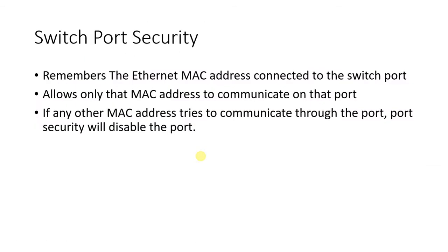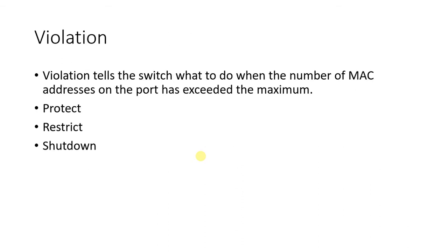For switch port security, the switch remembers the Ethernet MAC address connected to each switch port. Each computer has a unique MAC address, and the port will allow only that MAC address to communicate. If any other MAC address tries to communicate through the port, port security will disable the port. Violation tells the switch what to do when the number of MAC addresses exceeds the maximum — for example, if 10 are allowed and an 11th machine arrives.